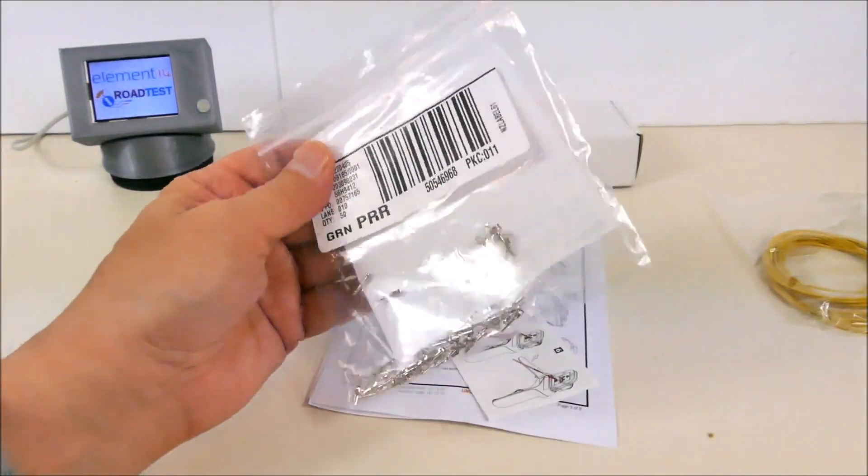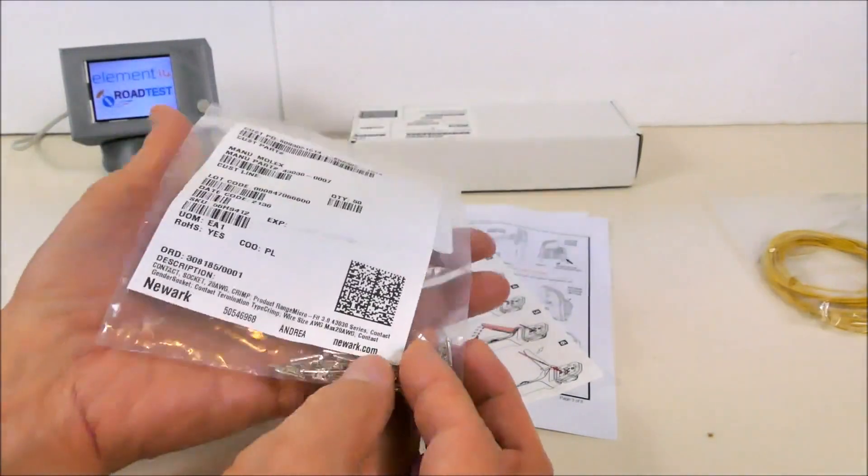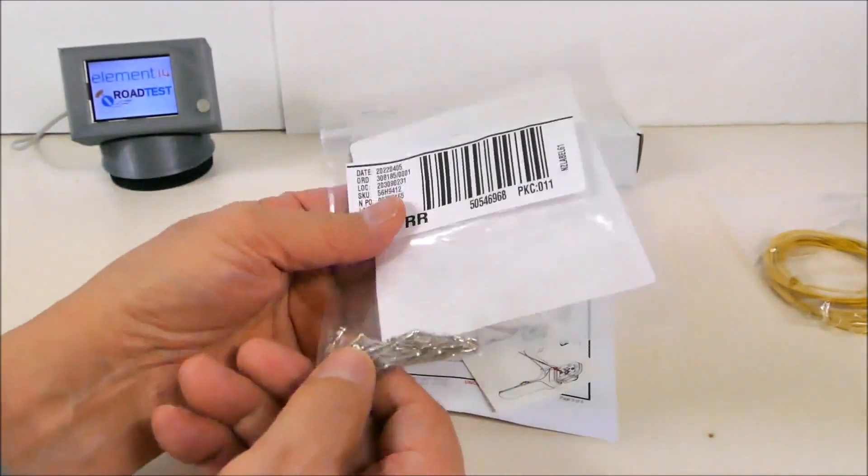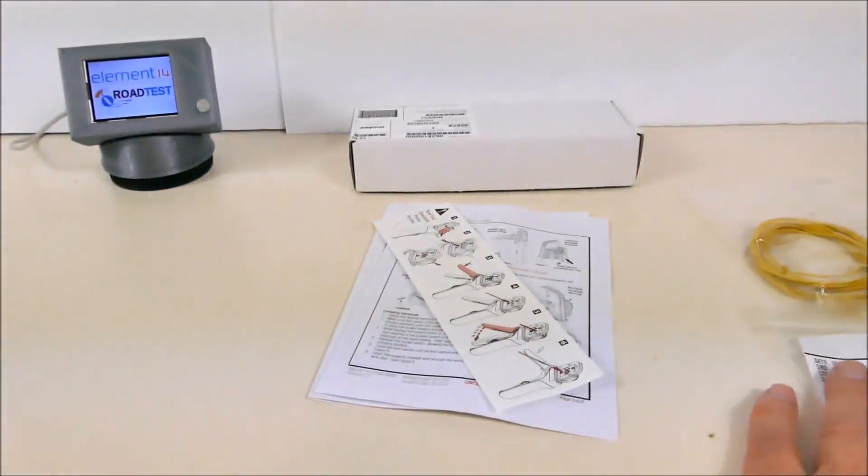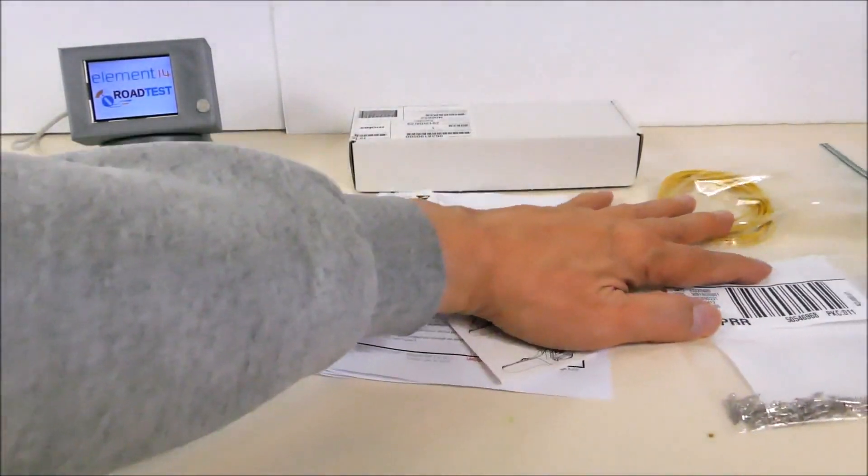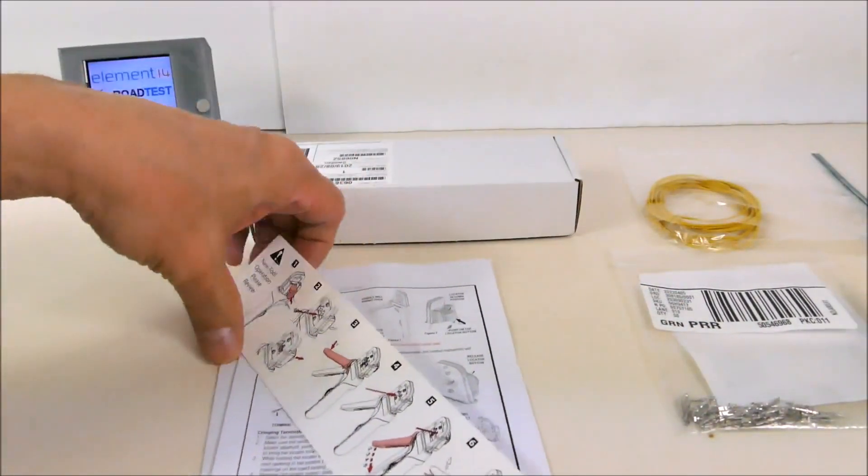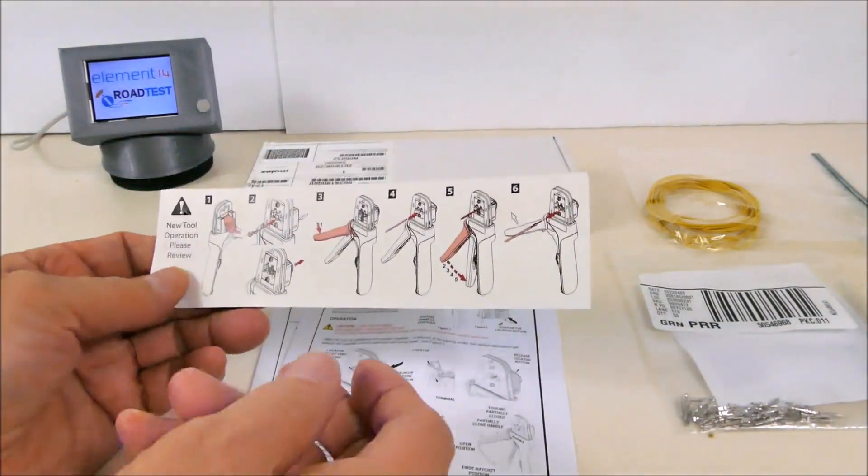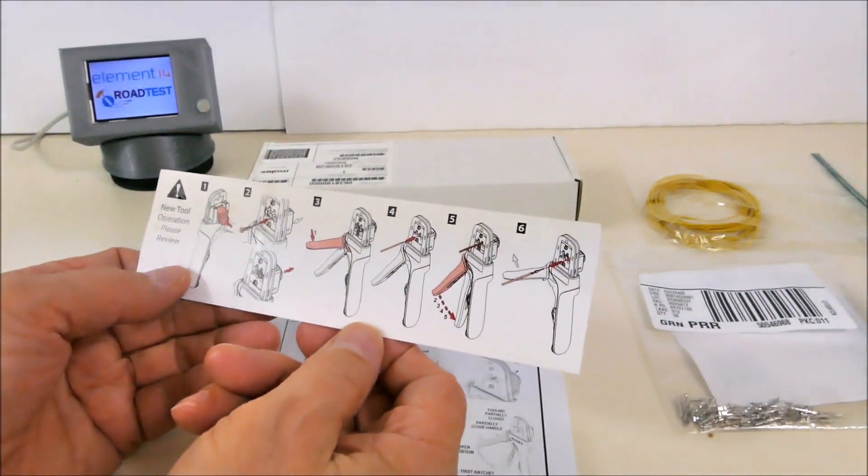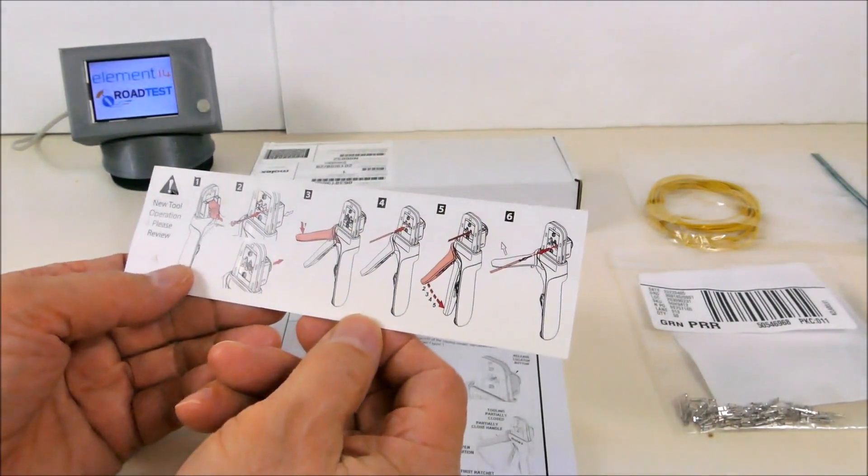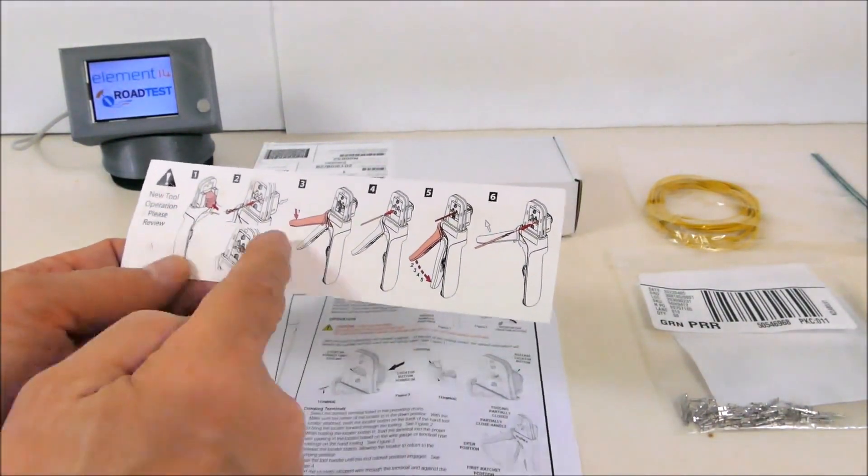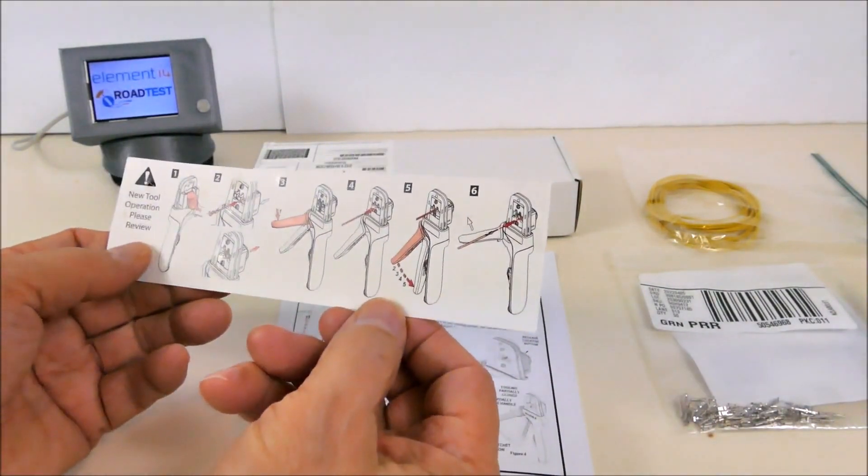Inside the crimper box were three documents. One is an illustrated guide to making crimps with this crimper, an easy step-by-step process.